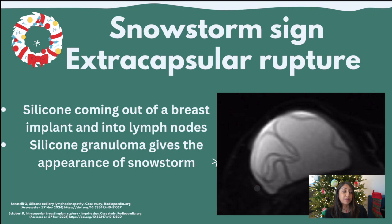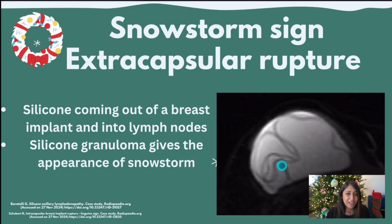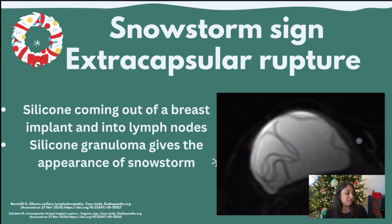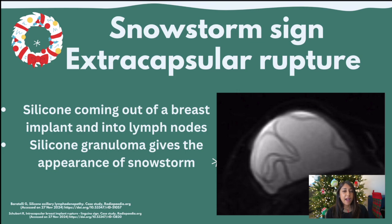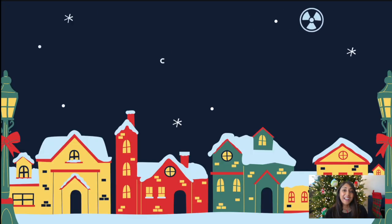This breast MRI shows an intracapsular rupture — a classic linguine sign. Maybe I should make that Thanksgiving themed next year with food-related items. When you see the white signal come out into the breast tissue, that indicates an extracapsular rupture. This only applies to silicone implants — saline implants do not have these classic signs because saline just diffuses into tissue and gets absorbed without leaving behind silicone granulomas.